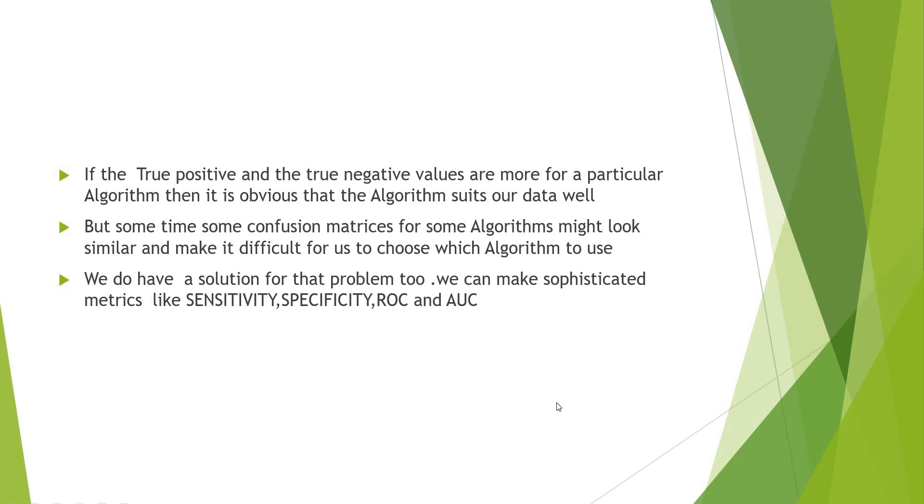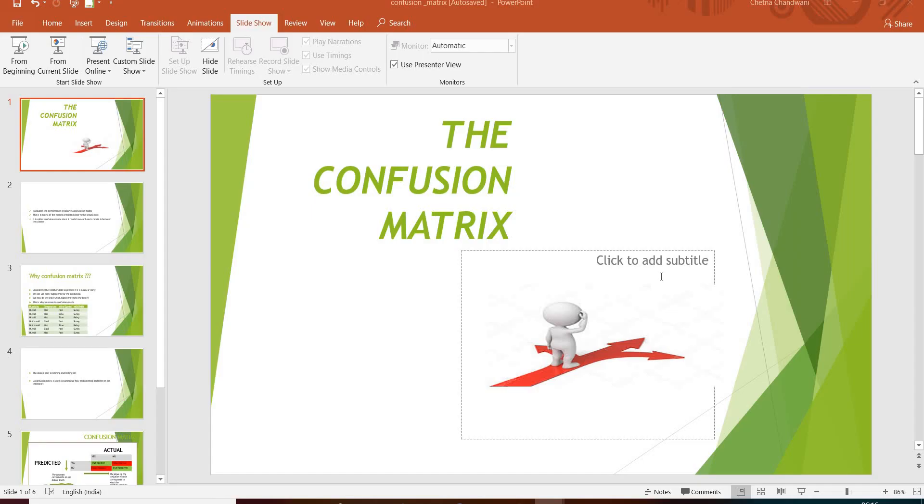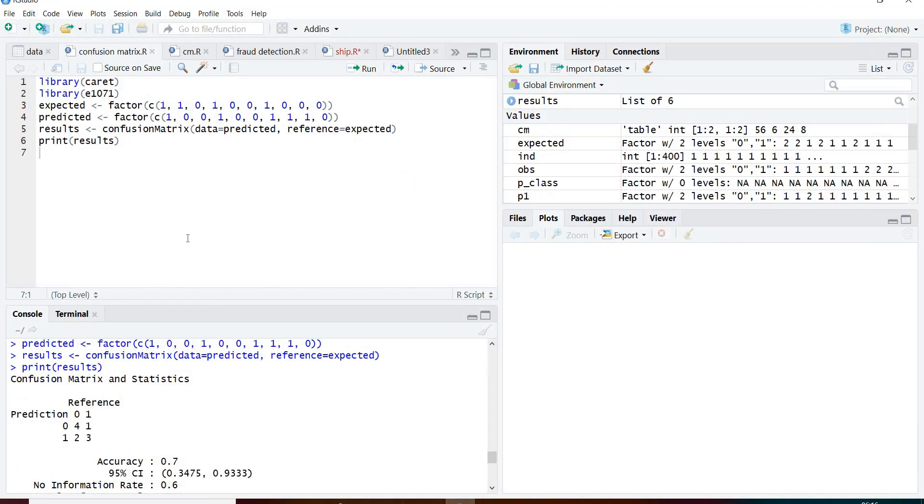We can make sophisticated metrics like sensitivity, specificity, ROC, and AUC. For now, let us see how to implement the confusion matrix in R.